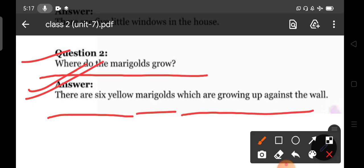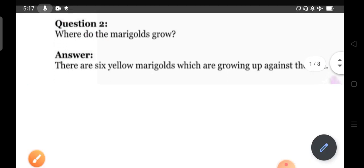Aapko answer kya kya raha? There are six yellow marigolds which are growing up against the wall. Yeh, six yellow marigolds hai, joh diwar ke against bade hoote hai, grow kerti hai. Joh diwar se chippak ke kya hote hai? Bade hoote hai. Okay?